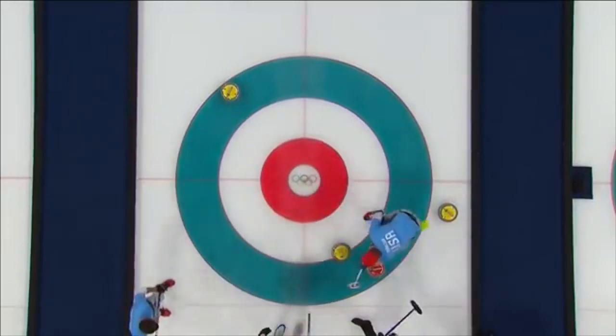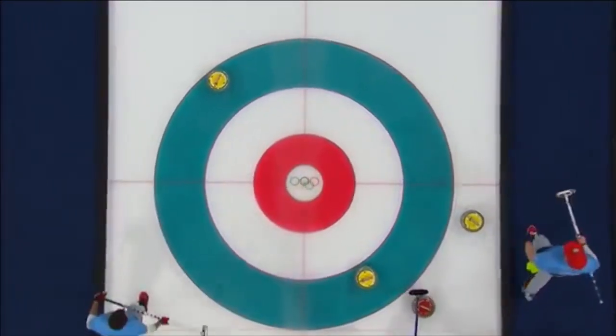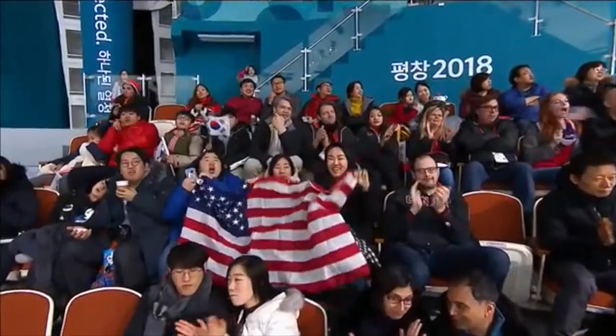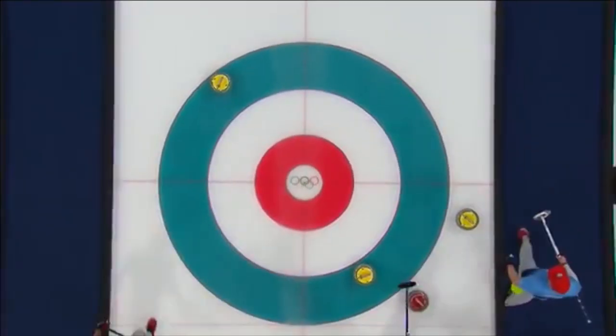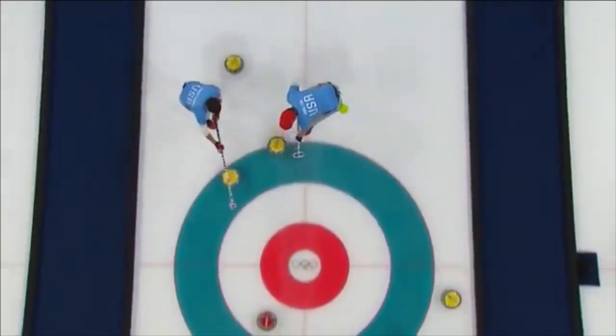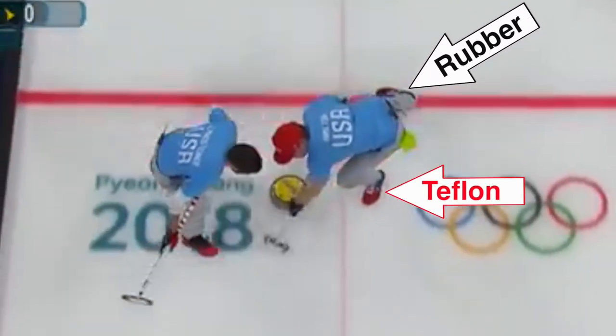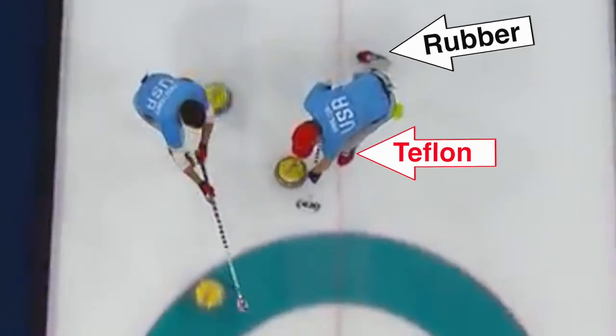Each player wears a curling shoe with a rubber sole and a Teflon sole. The rubber sole is for walking, and the Teflon is for sliding. If I rewind the video and play it in slow motion, you can see the uses of the different soles in action. How does that work, you ask? Let's take a closer look at the physics behind curling shoes.